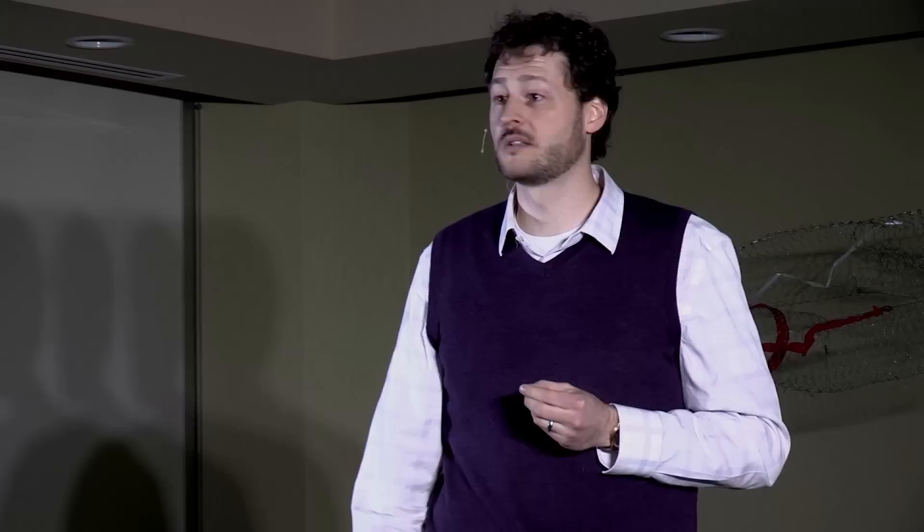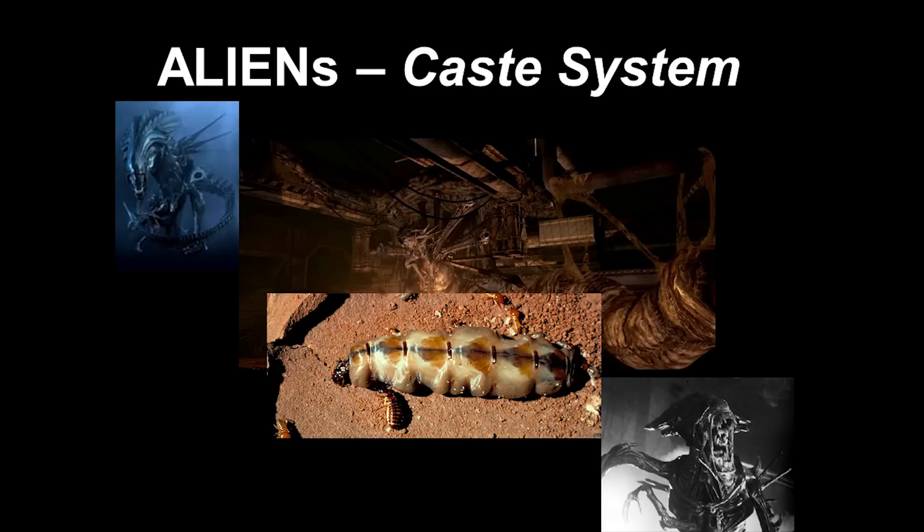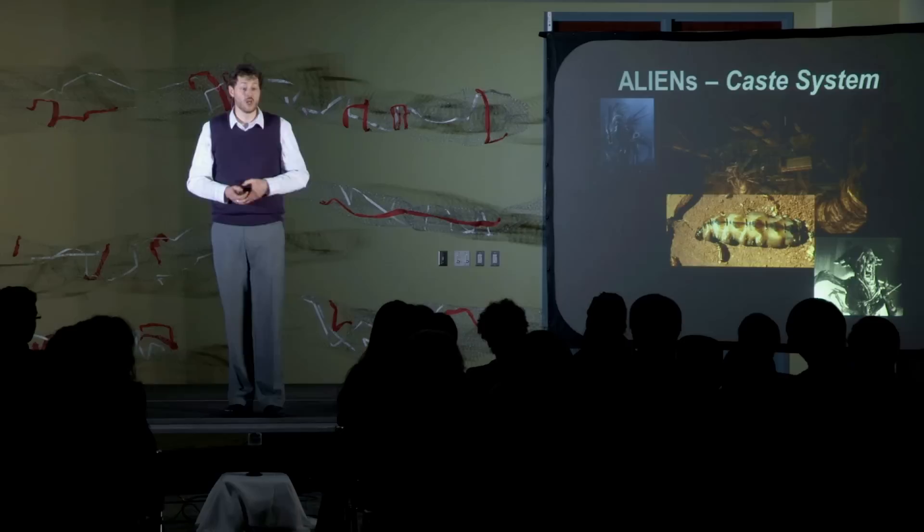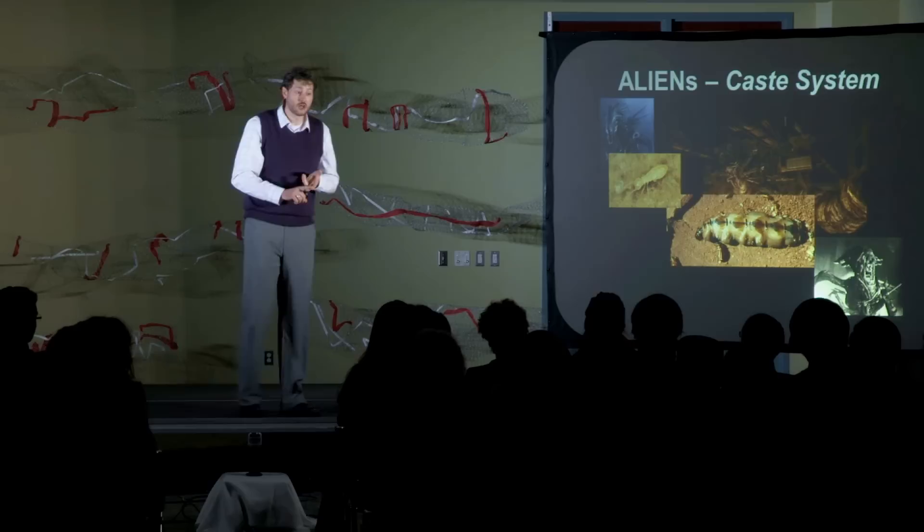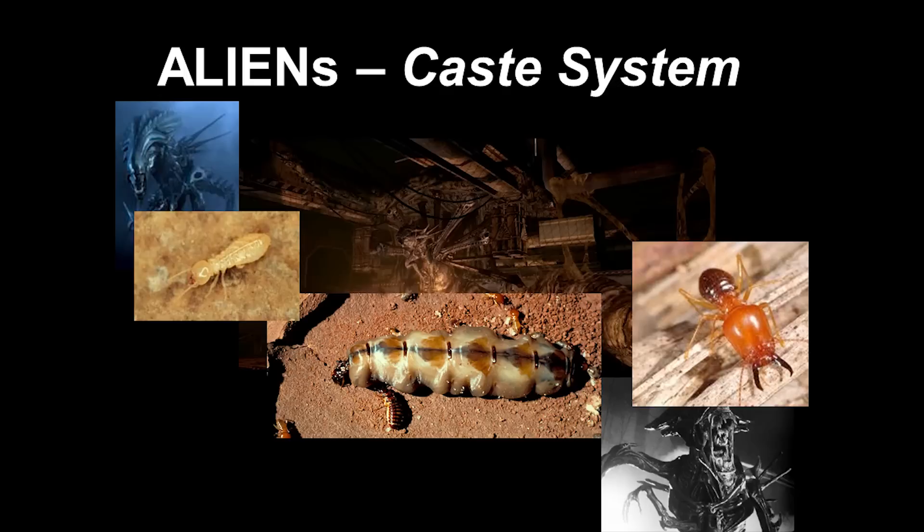This is directly analogous to the caste system we see in termites and ants. Termites, here's a termite queen. Here's her head and her body and her large distended abdomen. She is simply an egg-laying machine. There's also workers. They clean the colony. They construct the colony. They tend to that queen. And then there's also soldier morphs. Enlarged head, really big mandibles. They are out there protecting.